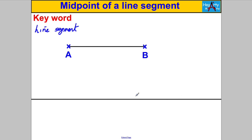Whereas a line — yes it's a straight line like a line segment — doesn't have a start and a finish point; it goes on infinitely. You can find the midpoint of a line segment because it's a certain length, whereas a line just goes on forever, so it doesn't have a middle as it were. That's a little distinction between line segment and line — line segments are what we'll be talking about in this video.